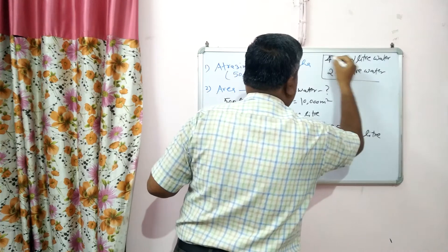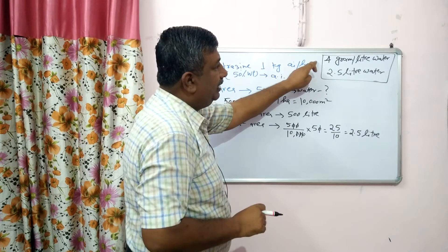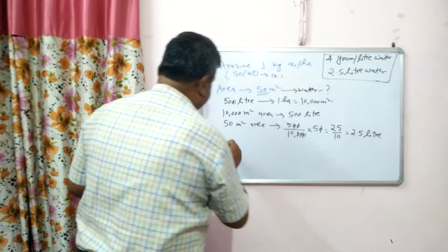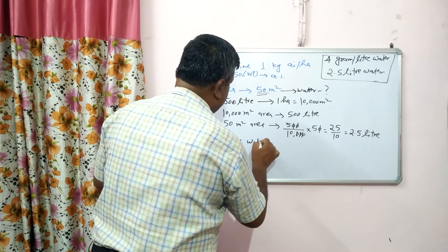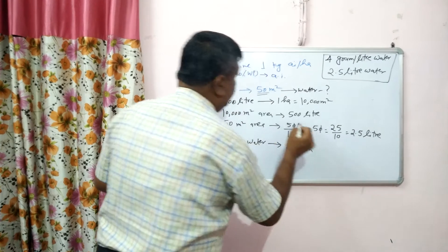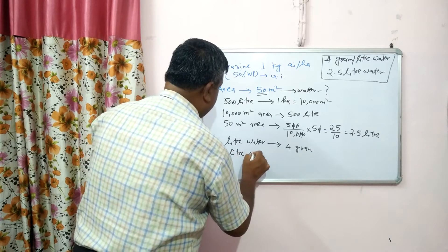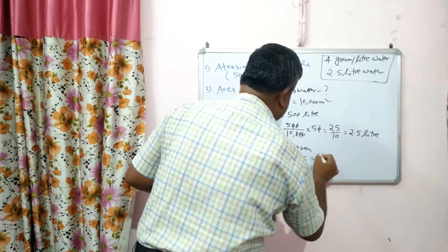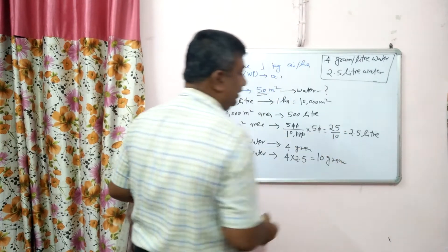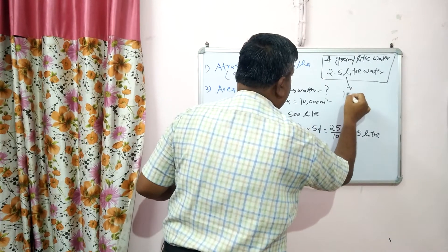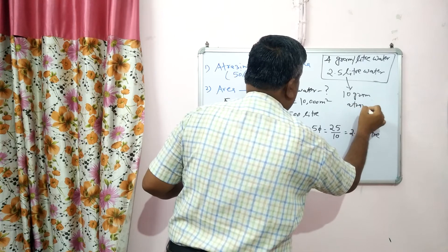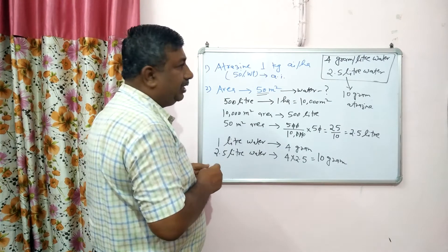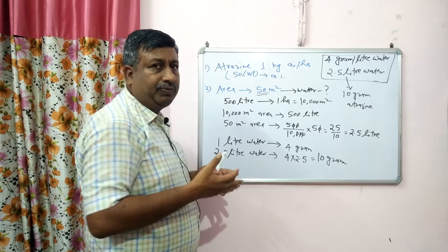First we calculate the amount of herbicide in gram per litre water, and how much water is required for the area. In 1 litre water, 4 gram Atrazine is required. For 2.5 litre water, the requirement is 4 multiplied by 2.5, that is 10 gram. So dissolve 10 gram Atrazine in 2.5 litre water and spray over 50 square meter area. This is the way to calculate the herbicide dose for a small plot.